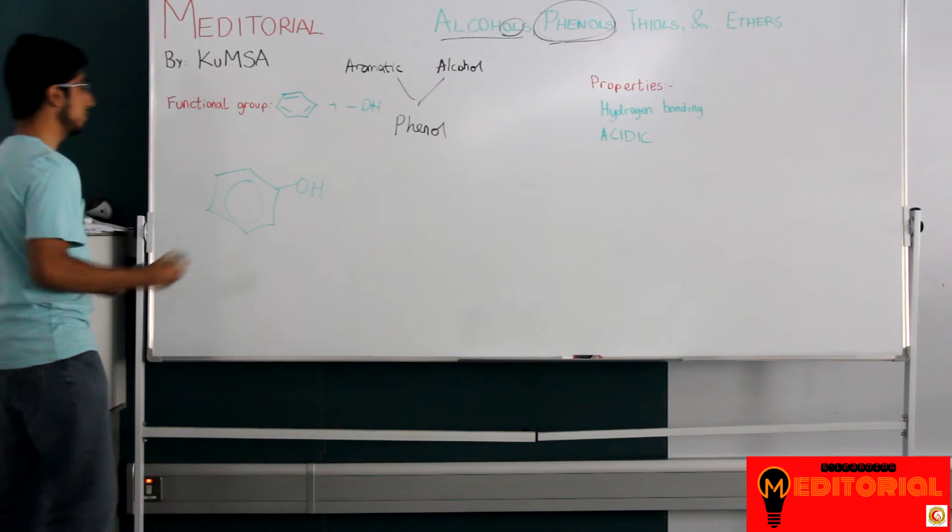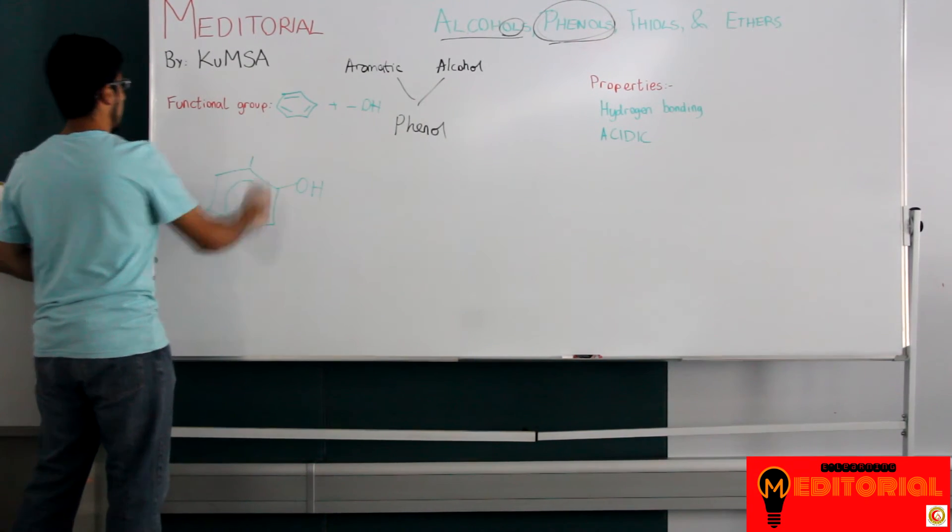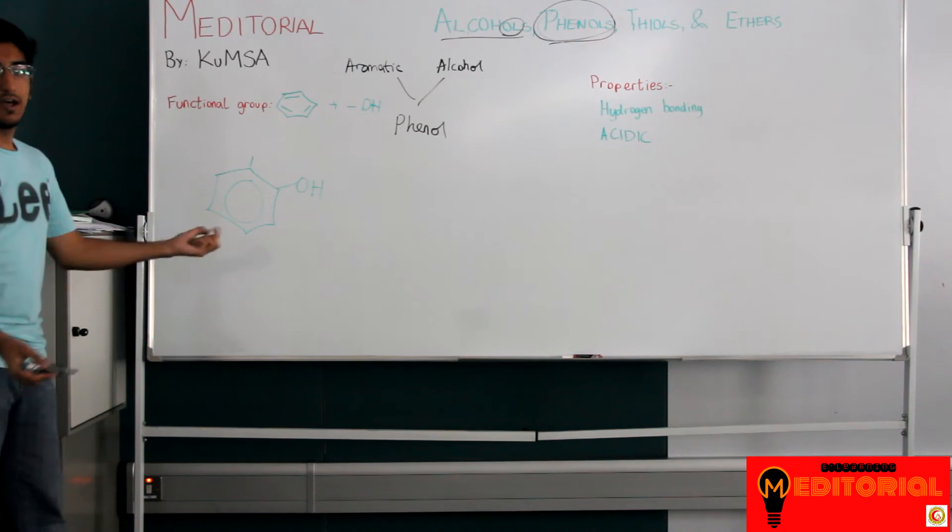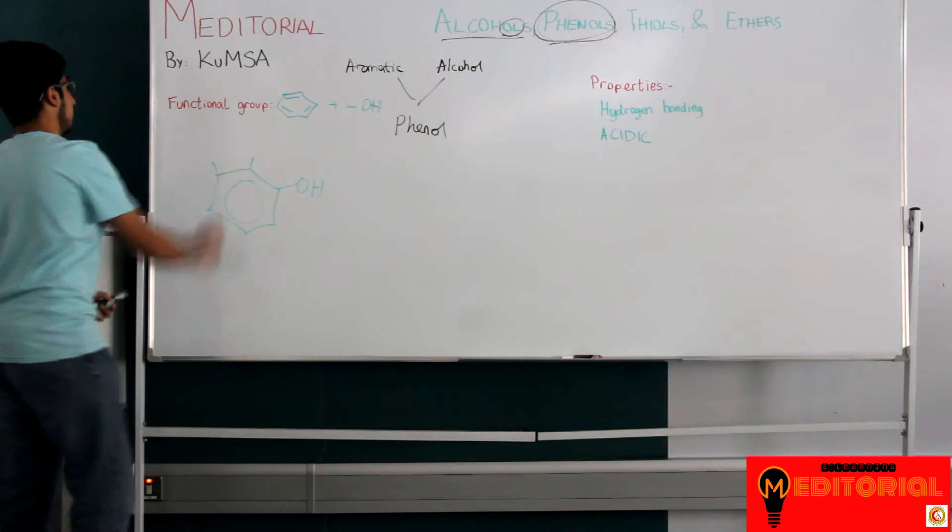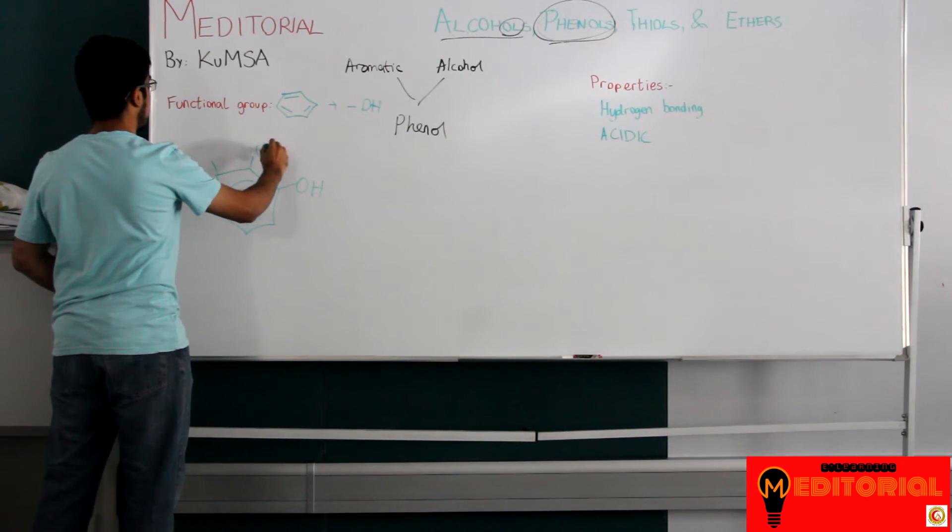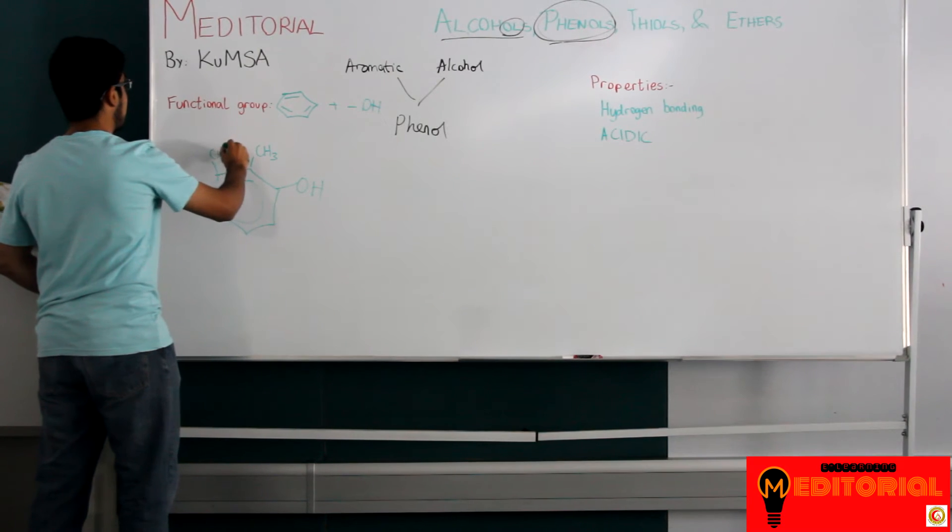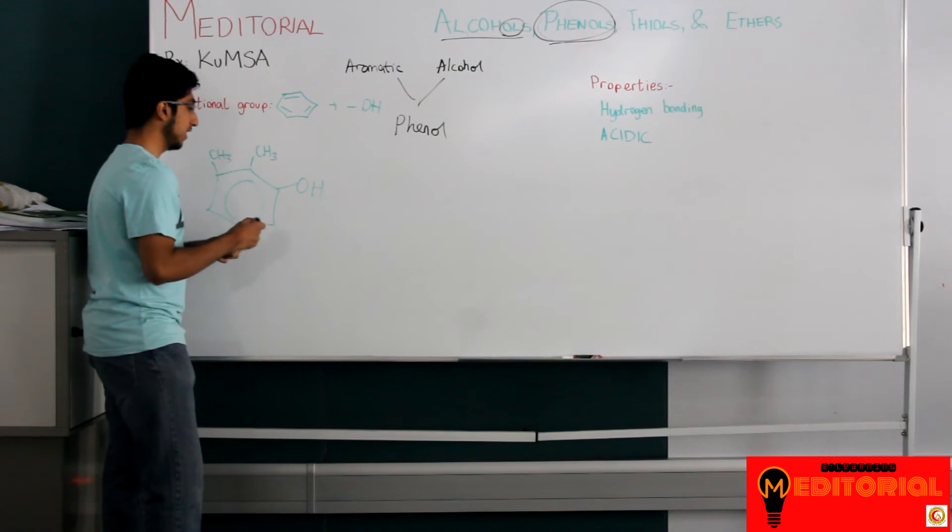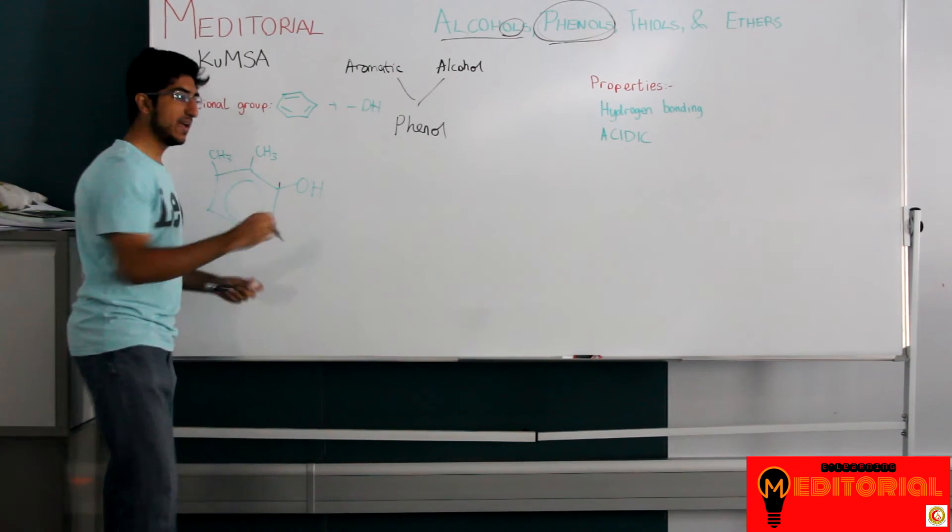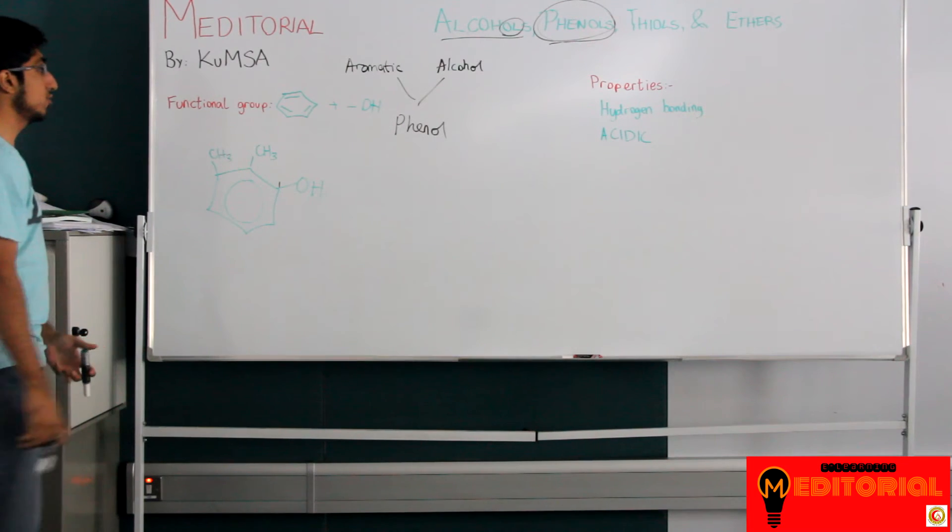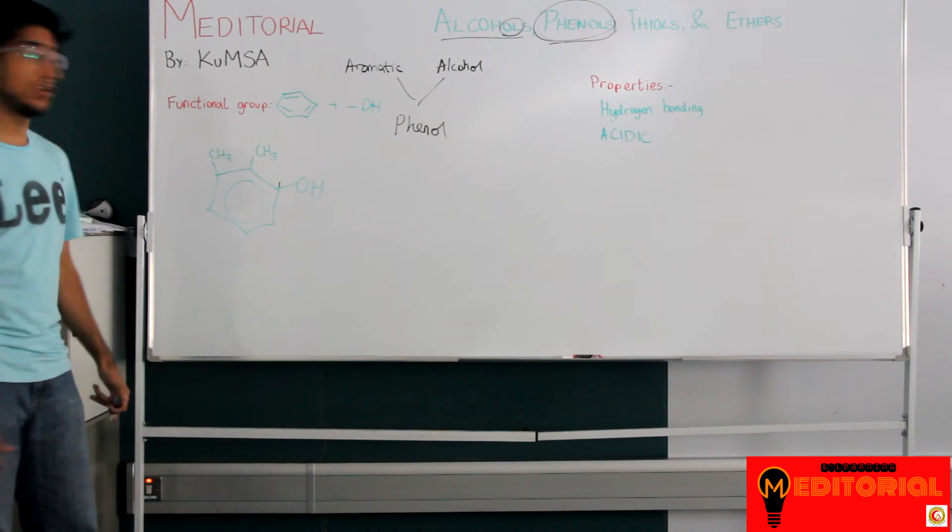Now of course, I can add some groups such as a methyl group, so this would be 2-methylphenol, this would be 2,3-dimethylphenol, you know, if I add methyl groups. So the naming isn't that hard because the name ends with phenol. And as long as you keep the OH carbon number one and you make sure everything else is the lowest number. So I'm not going to bother you with doing those things. You can practice those things on your own time.